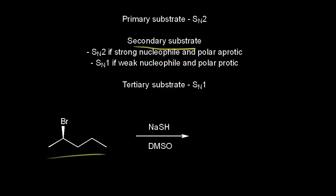First, let's look at the nucleophile. This is Na⁺ and SH⁻, so the SH⁻ is going to be our nucleophile, and that's a strong nucleophile — a negative charge on a sulfur makes a strong nucleophile. For our solvent, DMSO is a polar aprotic solvent, which favors an SN2 reaction. So with a strong nucleophile and a polar aprotic solvent, we need to think about an SN2 mechanism.